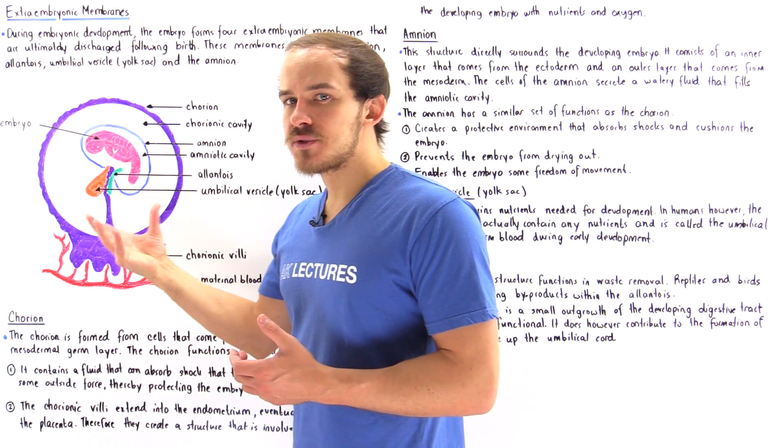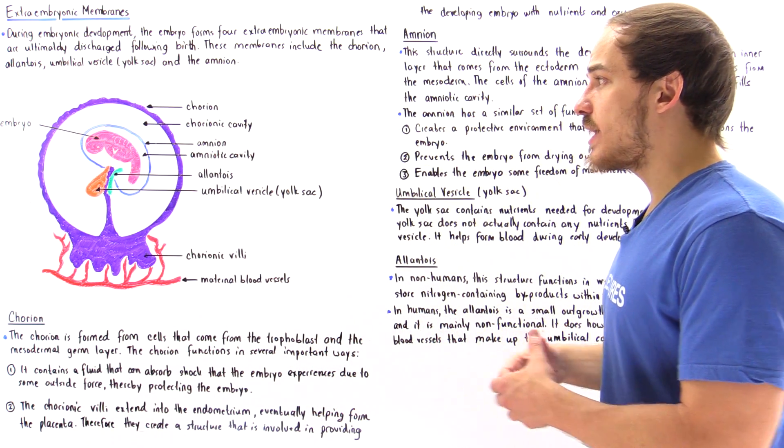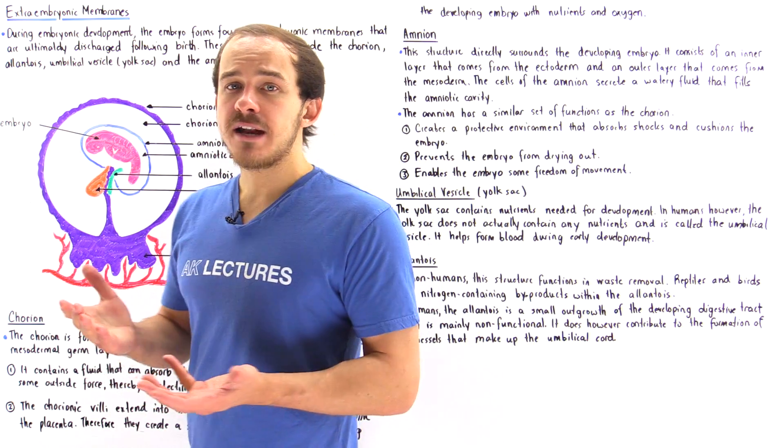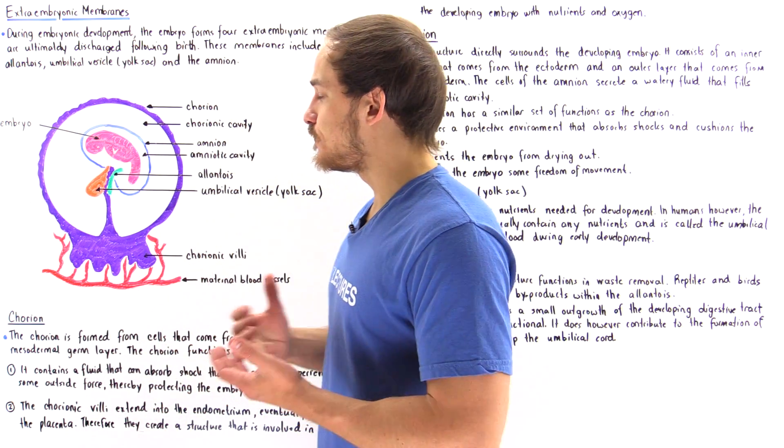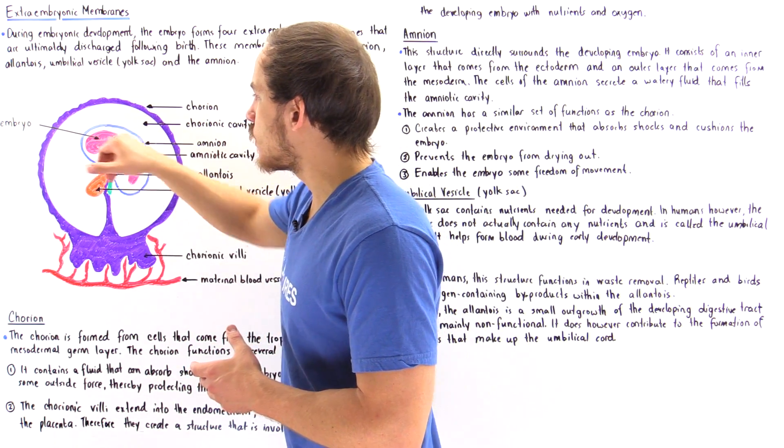So this diagram describes the developing fetus as well as the four extra embryonic membranes as they sit inside the endometrium of the uterus of that female individual, the mother. Now the actual developing embryo is this structure here.